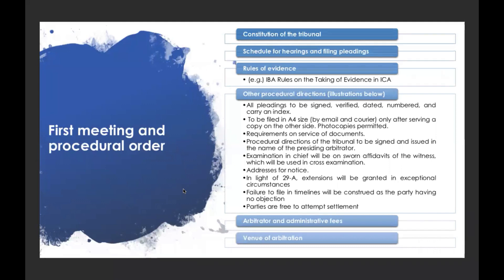Sometimes arbitration rules provide that the notice of arbitration can be treated as a statement of claim. Depending on the facts, you can choose to make it completely exhaustive so that you do not need to file a separate statement of claim later, or given urgency, file a concise notice of arbitration and retain the right to file a detailed statement of claim. In the notice of arbitration, highlight all the breaches of the other side — there is no strict requirement to provide an exhaustive list of all claims you will submit before the tribunal, as that can be done at the statement of claim stage.